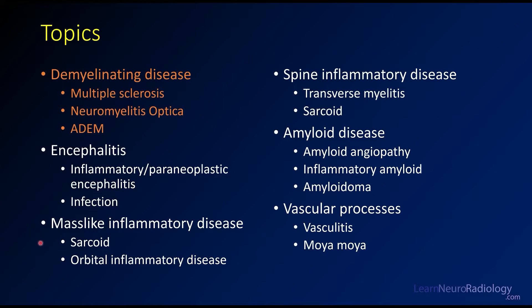Typically the ones you see are sarcoid and orbital inflammatory disease. We'll talk about spine inflammatory disease — transverse myelitis, sarcoid. We'll talk about amyloidomas and manifestations of amyloid disease, so amyloid angiopathy or CAA, inflammatory amyloid and amyloidomas. And then finally, we'll have a separate lecture where we'll talk about vascular processes. Without further ado, we're going to drop right into these and talk about demyelinating disease.